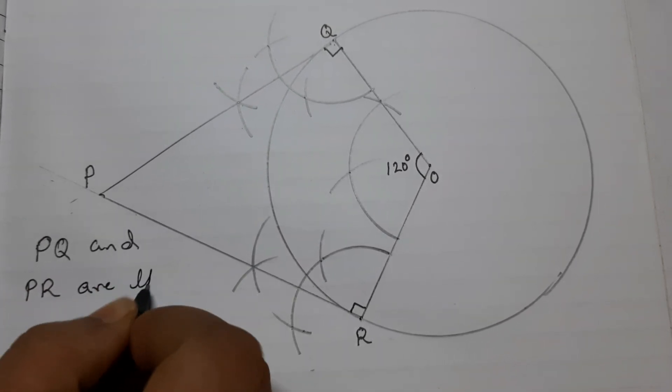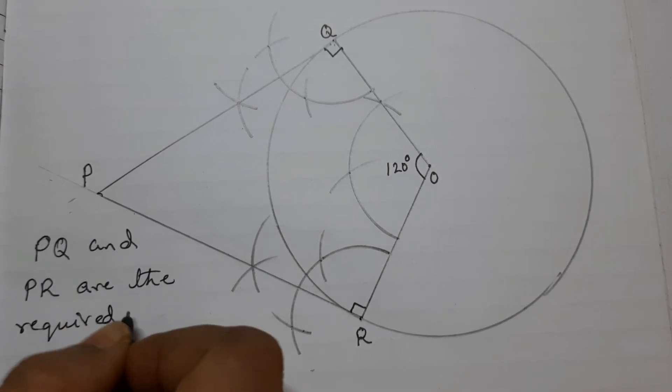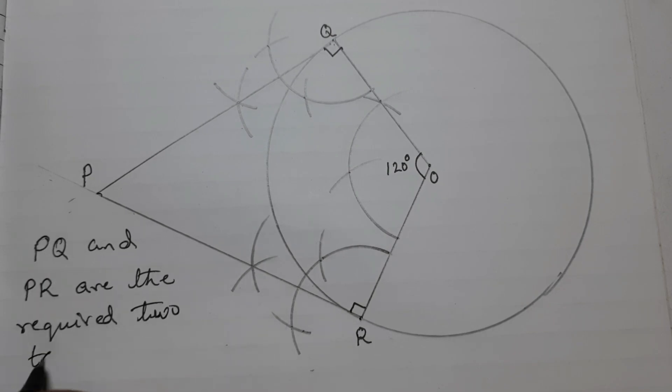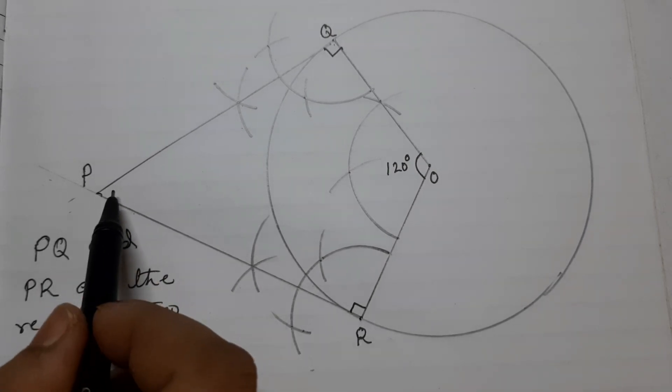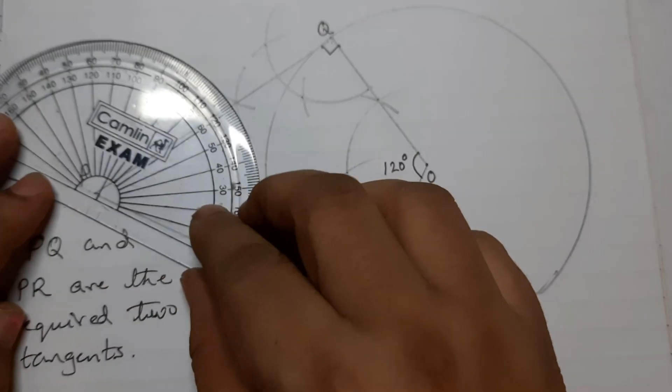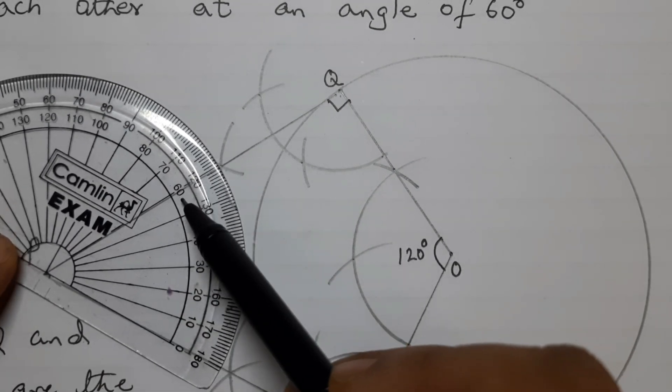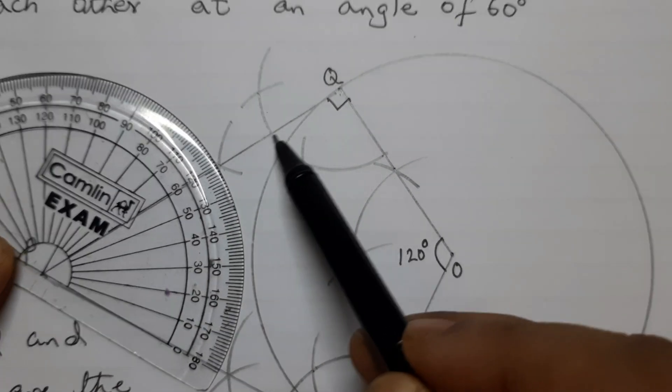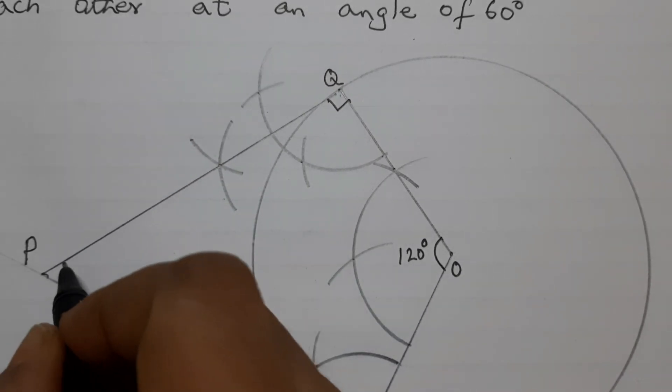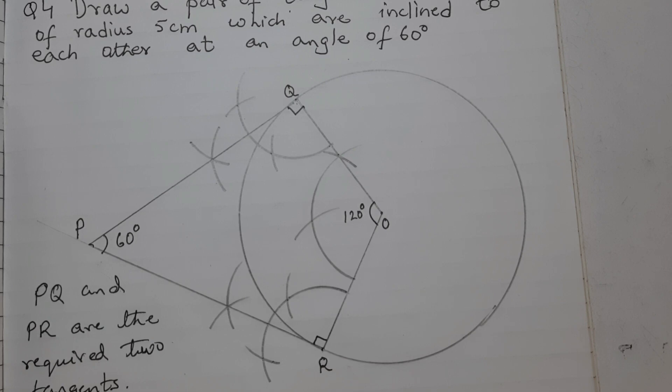P, Q and P, R are the required two tangents. And this angle here formed is 60 degrees. Now let us check with the protractor whether we got it correctly. You can see this 60 degrees marking and this line here forming. So this angle here formed is 60 degrees.